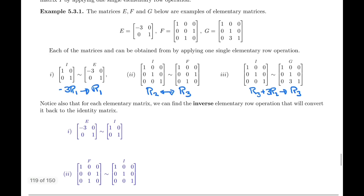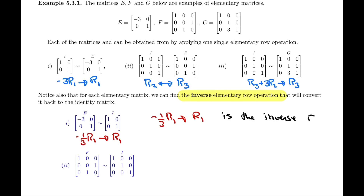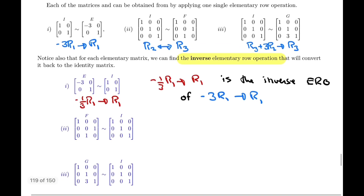For every elementary matrix, we can find the inverse elementary row operation — the operation that converts the matrix back to I. For matrix E, we apply negative one-third times row one as our new row one, which turns E back to I. So negative one-third times row one is the inverse ERO of the original operation, which was negative three times row one. The inverse is essentially just taking the reciprocal.